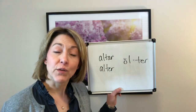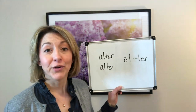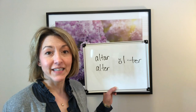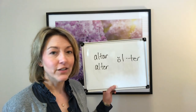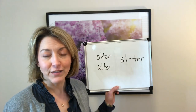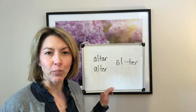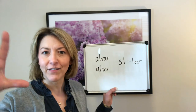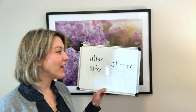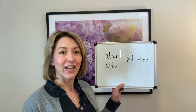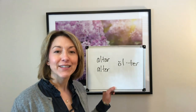Next, for syllable number two, you're going to start with the T sound. Touch the tip of your tongue to the back of your top front teeth, pull that tongue down, and let the air puff out. Then we're going to end with that 'er' sound.